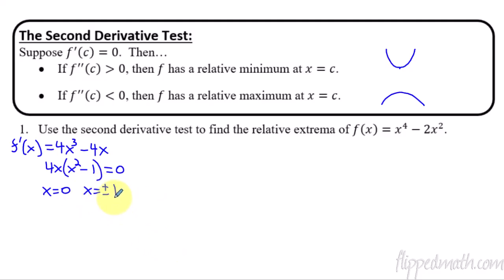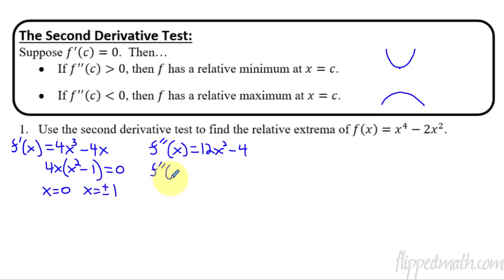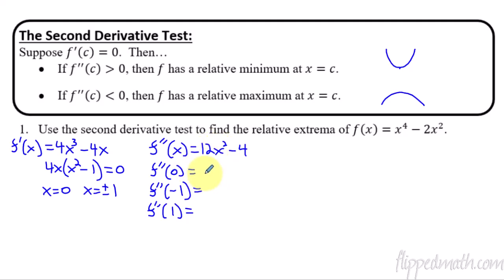Here are all of our candidates for relative extrema. Next up is to find the second derivative. Take the derivative of the first derivative, so the second derivative of f is going to be 12x² minus 4. I don't need to set the second derivative equal to zero — I'm not looking for points of inflection. What I'm doing is figuring out if it's concave up or down at these three points. So I take the second derivative and evaluate it at these three critical points. Plugging in zero: the whole 12x² term cancels, and I get negative four.